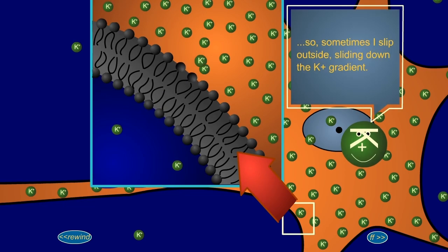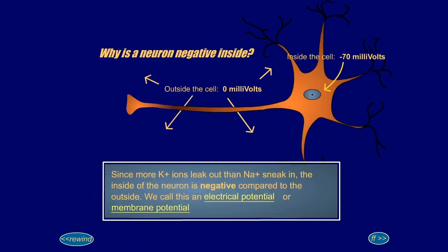So, sometimes I slip outside, sliding down the potassium gradient. Since more potassium ions leak out than sodium sneak in, the inside of the neuron is negative compared to the outside. We call this an electrical potential, or membrane potential.